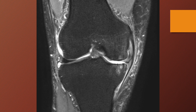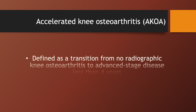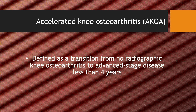This is a coronal T2-weighted MR image taken three months after onset of pain. It already shows massive destruction of the medial meniscus, diffuse hyaline cartilage defect in the medial femoral and tibial condyle, and bone marrow edema in the medial femoral and tibial condyle. You should prepare for the possibility of accelerated osteoarthritis before the procedure.